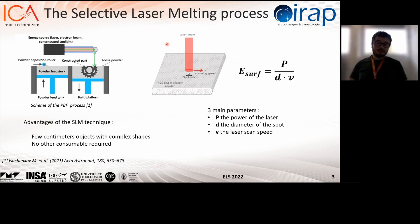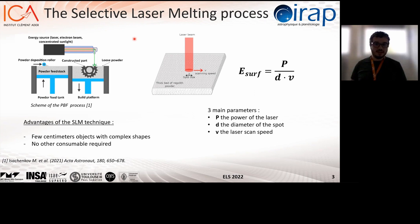You're all pretty aware of the in-situ resources utilization concept. Here the point is to directly use the lunar regolith as a source material in additive manufacturing. More precisely, our goal is to be able to create small objects of a few centimeters with complex shapes by using the selective laser melting technique.